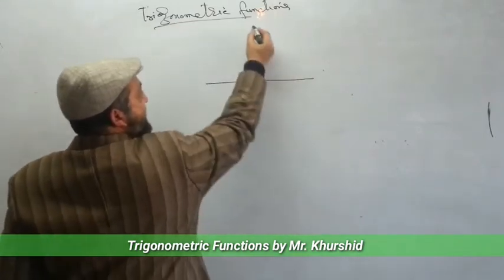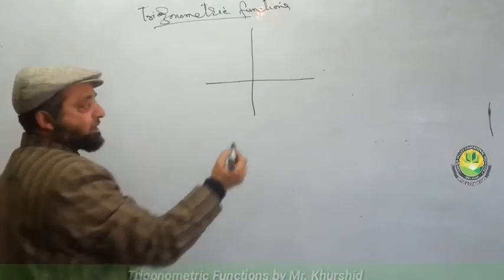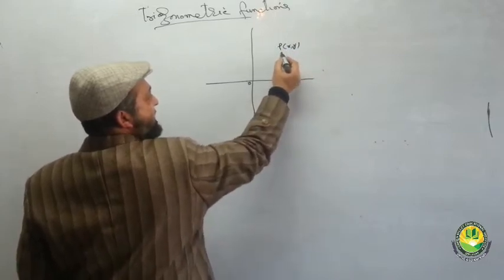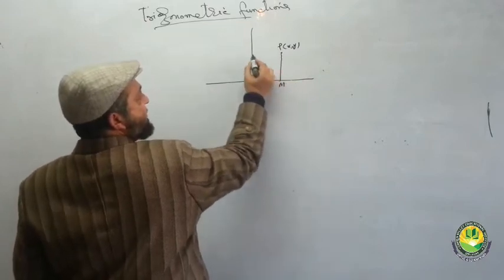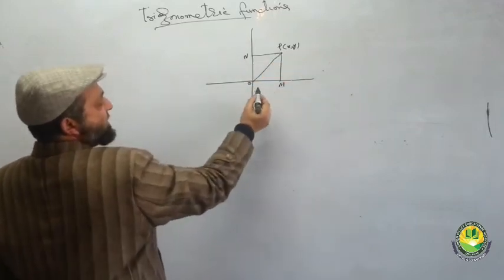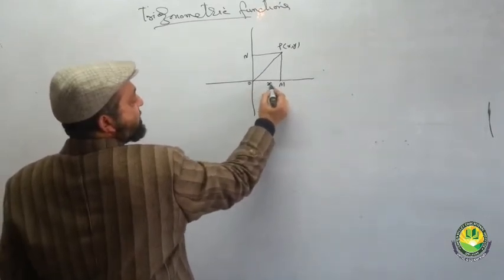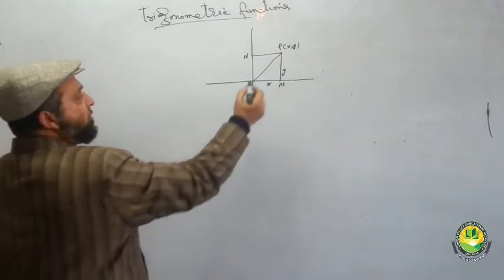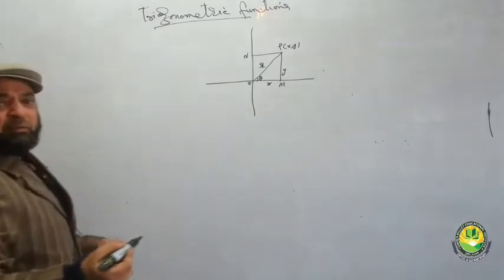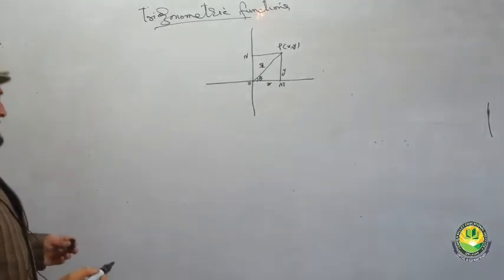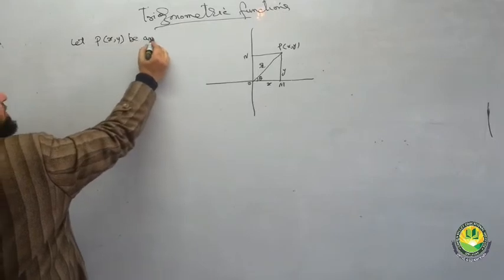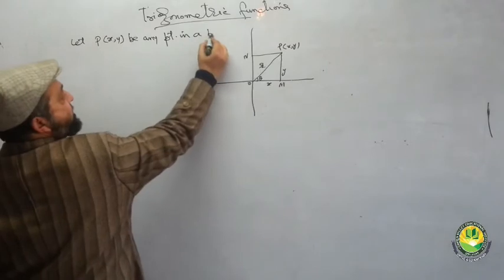This is the X-axis and this is the Y-axis. Here we have a point P(x, y). We have drawn a perpendicular from P. Let P(x, y) be any point in a plane.